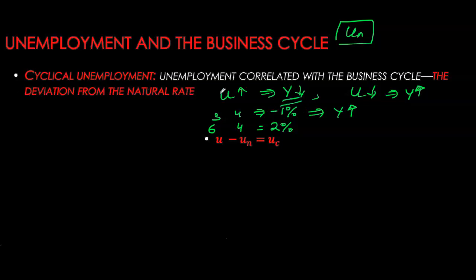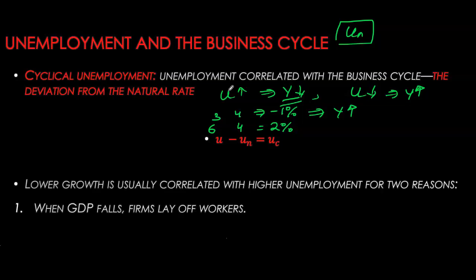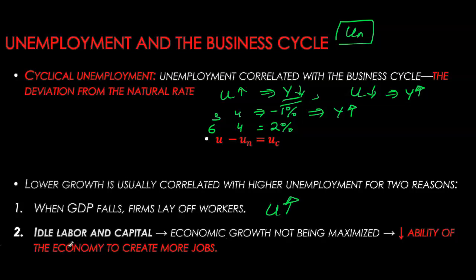This upward trend in unemployment during downturns is caused by two main reasons. First, when GDP falls, firms lay off workers, increasing unemployment. Second, idle labor and capital reduce the economy's ability to create new jobs, pushing unemployment further up. So far we have discussed three main types of unemployment: frictional, structural, and cyclical. Next, we will talk about inflation, and towards the end of the chapter we will discuss the relationship between inflation and unemployment.